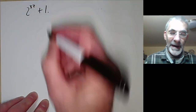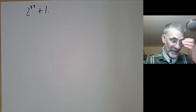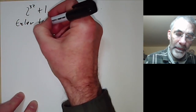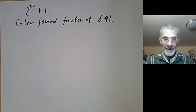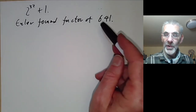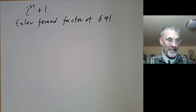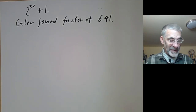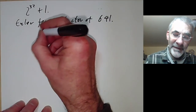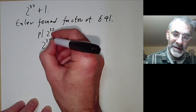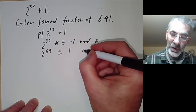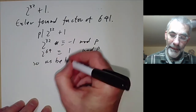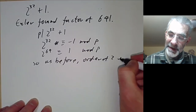What about the next number, 2 to the 32 plus 1? Euler found a factor of 641. How did he find it? He used a very similar argument: if p divides 2 to the 32 plus 1, then 2 to the 32 is congruent to -1 mod p, so 2 to the 64 is congruent to 1 mod p. As before, the order of 2 is 64, so p is congruent to 1 modulo 64.